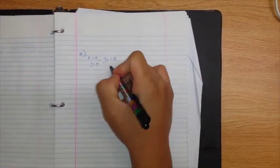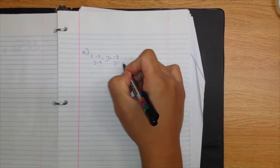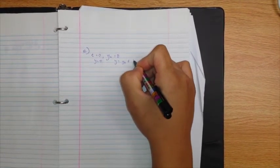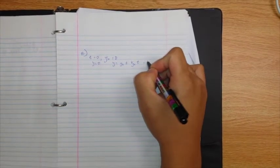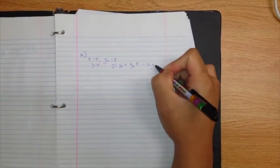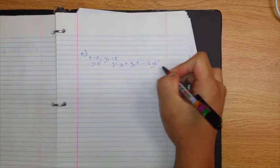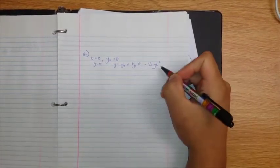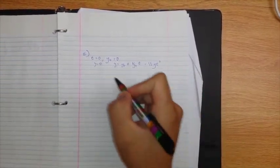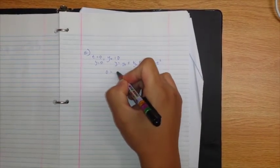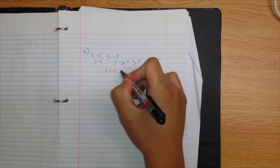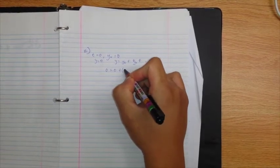We can use the equation y equals y initial plus v_y initial times time minus one half g times t squared. Now we can start solving for the time by plugging in the value.